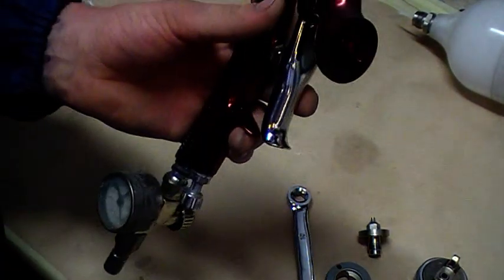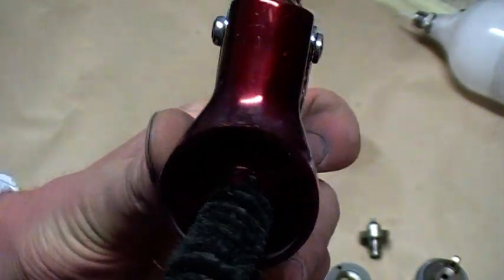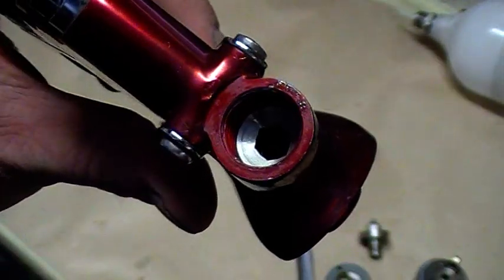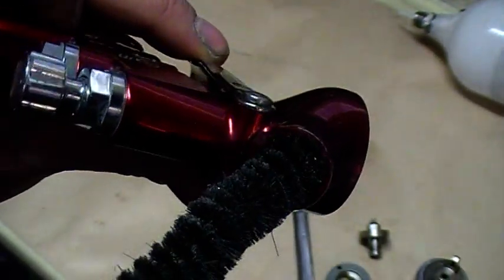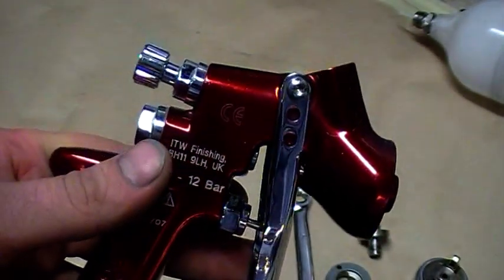And then we can take our little cleaner and poke away inside here, give it a good clean. Just get some thinners in a tub and give it a good clean out, and then that should just be about it for your gun. Most guns are the same as this.